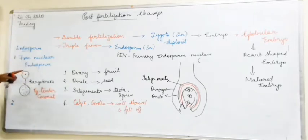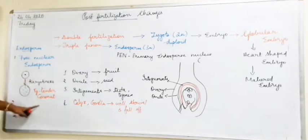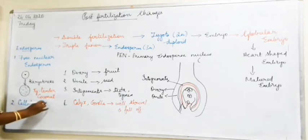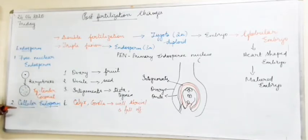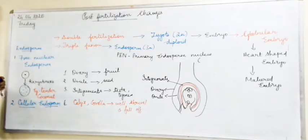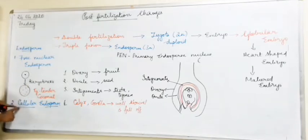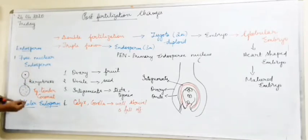After the free nuclear endosperm is formed, cytokinesis eventually takes place and cell wall formation occurs. At this stage it is called cellular endosperm. For example, in a coconut, the liquid water comes from the free nuclear endosperm, while the white edible kernel — the solid white part you eat — is formed from the cellular endosperm.